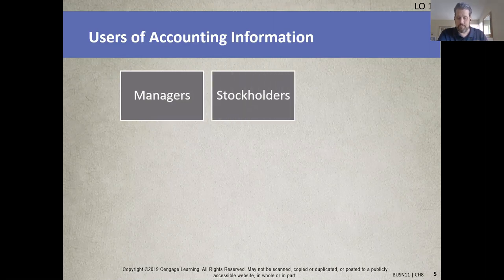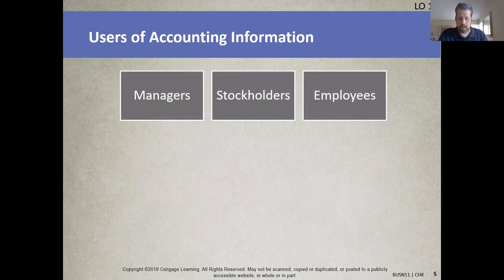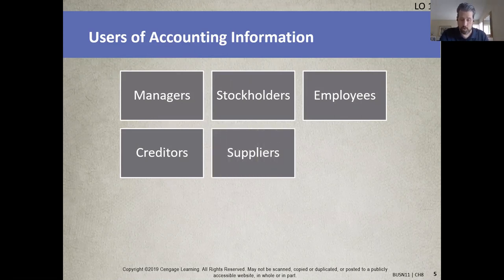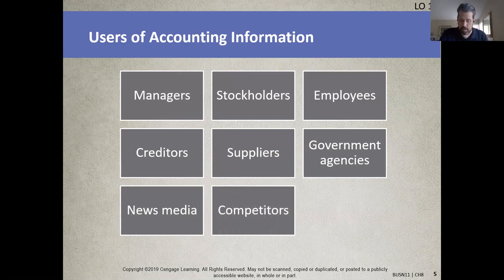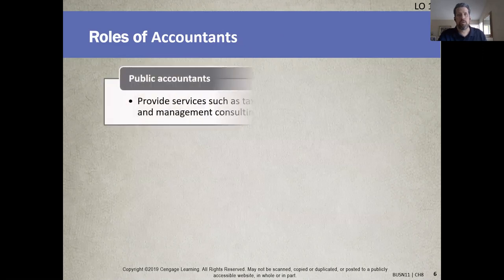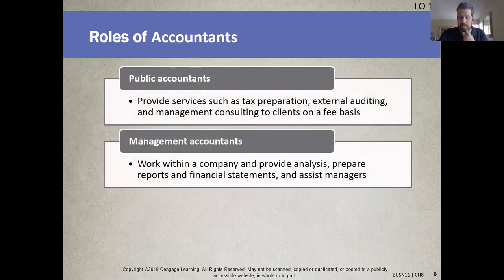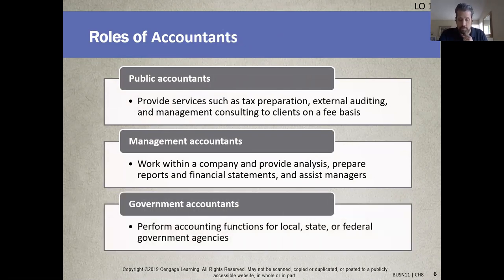Marketing managers use accounting to gain information on sales in different territories. Stockholders use accounting to learn about the financial performance of their companies. Employees use accounting to discuss pay and bonus issues. Creditors use accounting to assess borrowers' creditworthiness. Suppliers use accounting to confirm whether a company can pay them back. Government agencies like the IRS and the Securities and Exchange Commission use accounting for reporting purposes. Public accountants prepare tax reports, undertake external audits, and give advice to companies. Management accountants work within the company, assisting managers and analyzing reports and financial statements. Government accountants perform accounting functions for local, state, and federal government agencies.